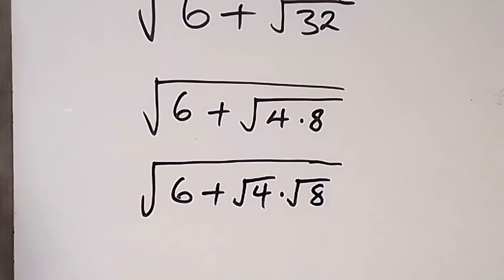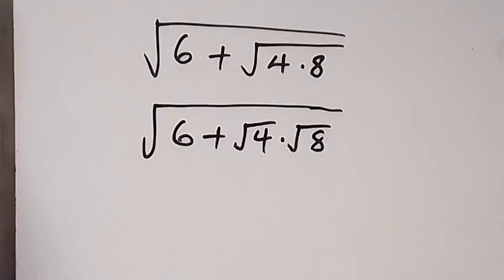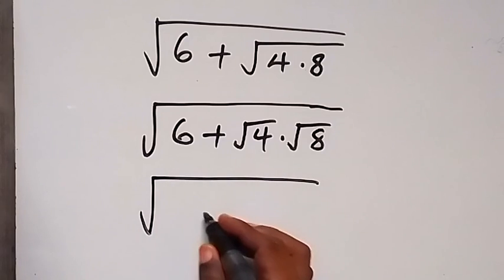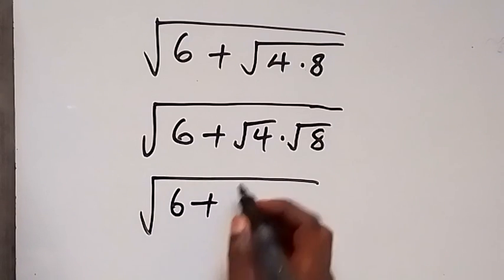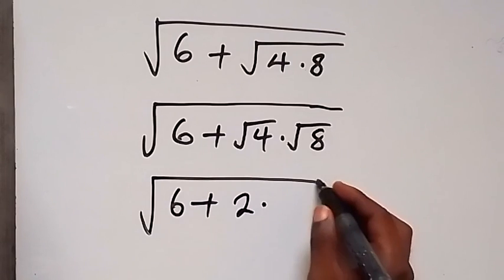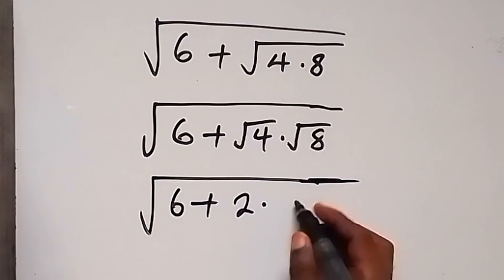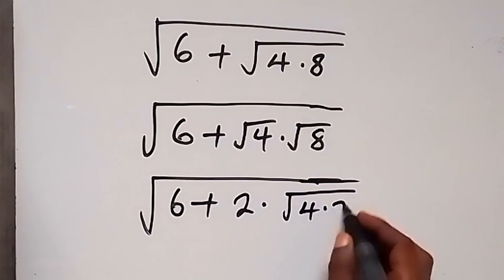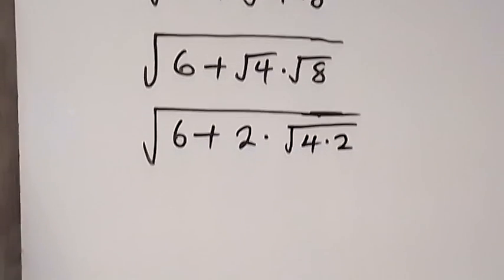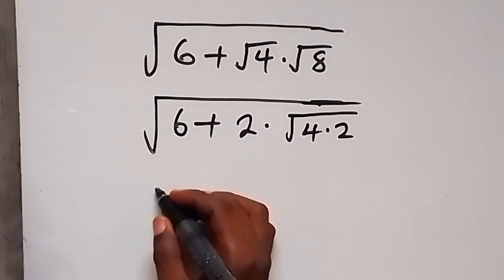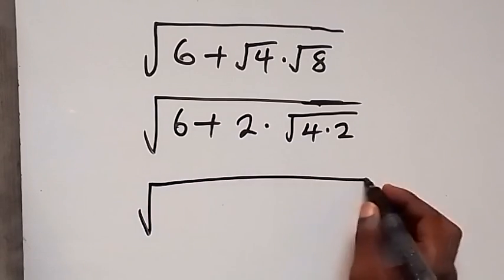From here we can still write it again, and this will become root 6 plus root 4, which can be written as 2, then times root 8. Also we can write root 8 as root 4 times 2, since 4 times 2 gives us 8.